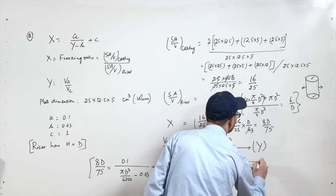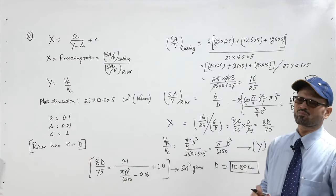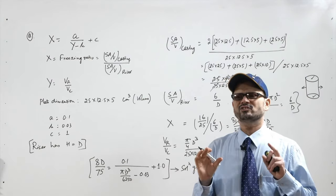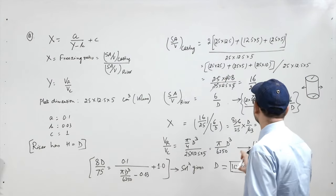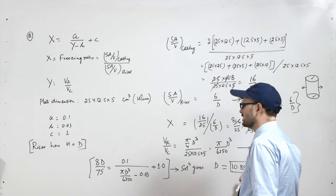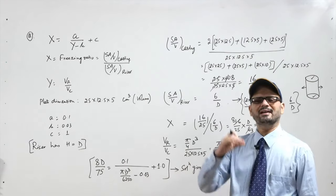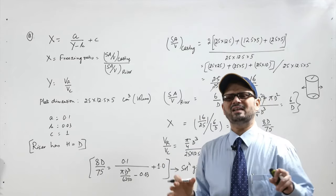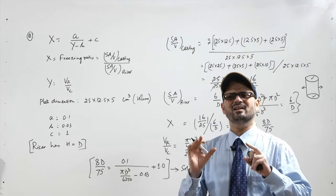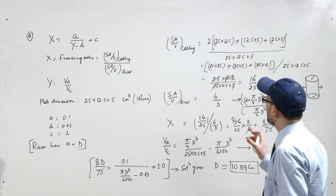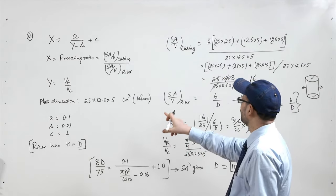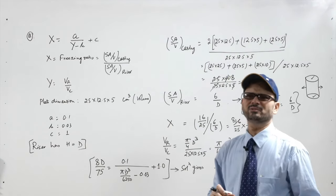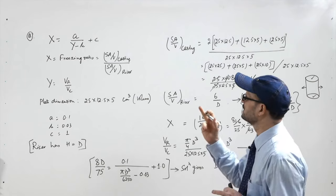Using the Keynes method with the given values of a, b, and c, the diameter of the riser is 10.89 centimeter. The height is also the same as the diameter. This cylindrical riser is sufficient to feed a plate casting of 25 cm by 12.5 cm by 5 cm.